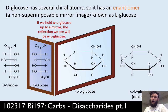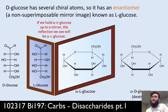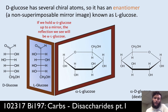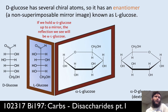Enantiomers are non-superimposable mirror images. D-glucose has many chiral atoms, and so it's going to have a non-superimposable mirror image — we call it L-glucose. Here we see both the Fisher projection on the left and the Haworth projection on the right of D-glucose reflected in a mirror on either side, and we see that they are the non-superimposable mirror images of one another — alpha and L and D-glucose.